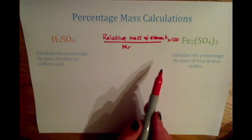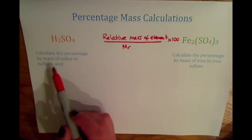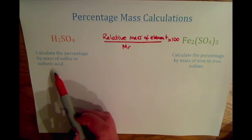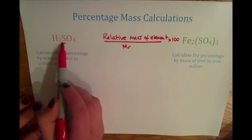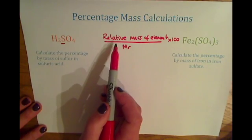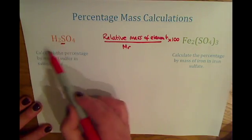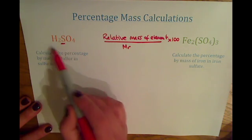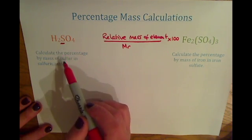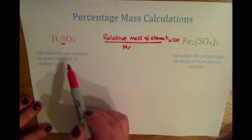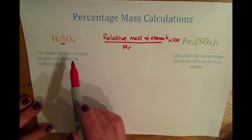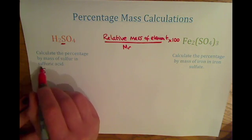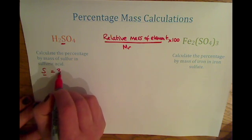I've got a couple of examples here which I'll work through with you. This question says: calculate the percentage by mass of sulfur in sulfuric acid. First of all, we need to calculate the relative mass of sulfur. There is just one sulfur atom in this compound, so we look on the periodic table and see that the mass of sulfur is 32.